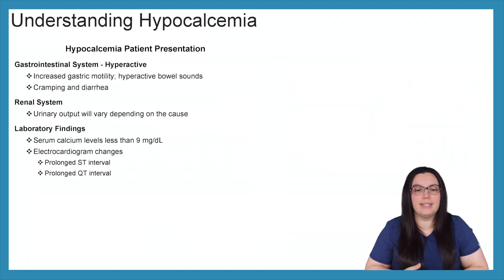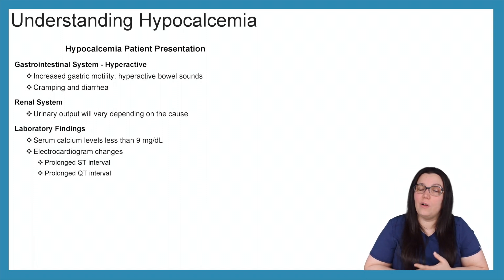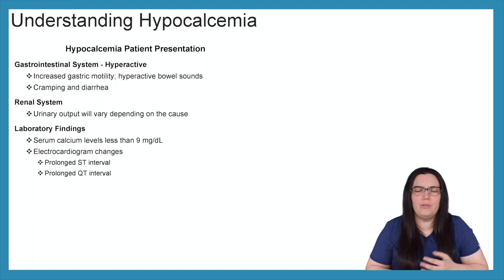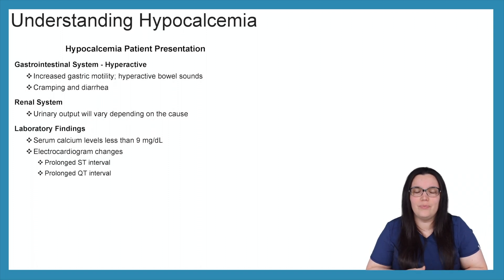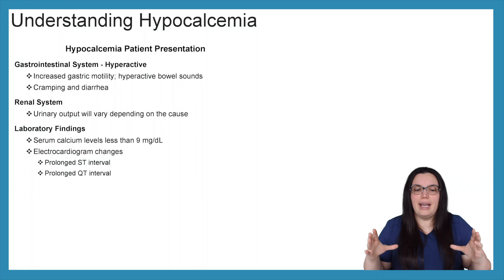When it comes to the gastrointestinal system, patients will be highly hyperactive — you'll see increased gastric motility, hyperactive bowel sounds, cramping, and diarrhea. With the renal system, urinary output will vary depending on the cause of the hypocalcemia. Laboratory findings will show serum calcium less than 9 milligrams per deciliter and electrocardiogram changes including prolonged ST intervals and prolonged QT intervals.